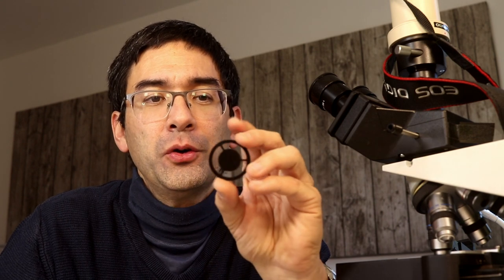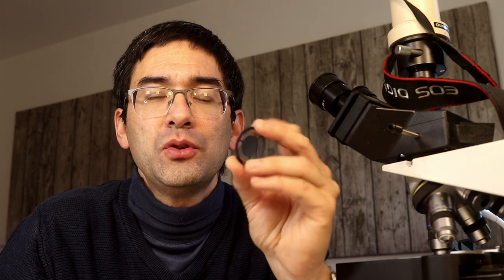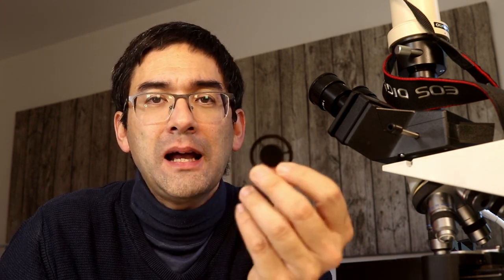So first of all, a dark field patch stop is one of the easiest modifications that you can do to a microscope and I think every microscope owner should have one of those. If you don't have this you can easily make them yourselves either using cardboard or using some black plastic.